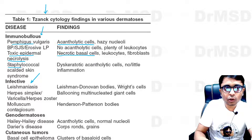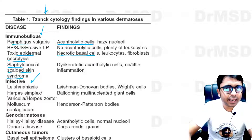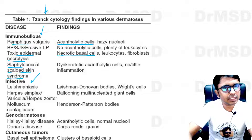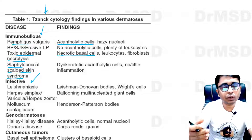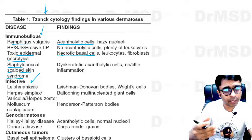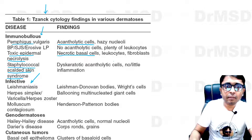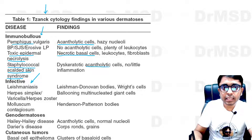In the case of staphylococcal scalded skin syndrome (SSSS), which is a toxin-mediated condition and an extension of bullous impetigo due to epidermolytic toxins A and B being hematogenously spread, we can notice acantholytic cells in the Tzanck smear.